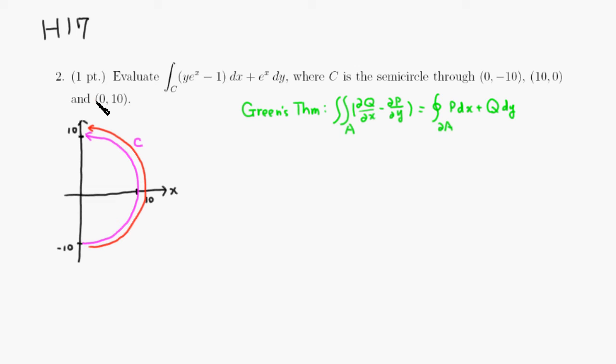So in order to use Green's theorem, we have to have a closed curve, so we have to actually add another one. So I'm going to go from this point down back down to say negative 10. So this is I'm going to call it C prime.